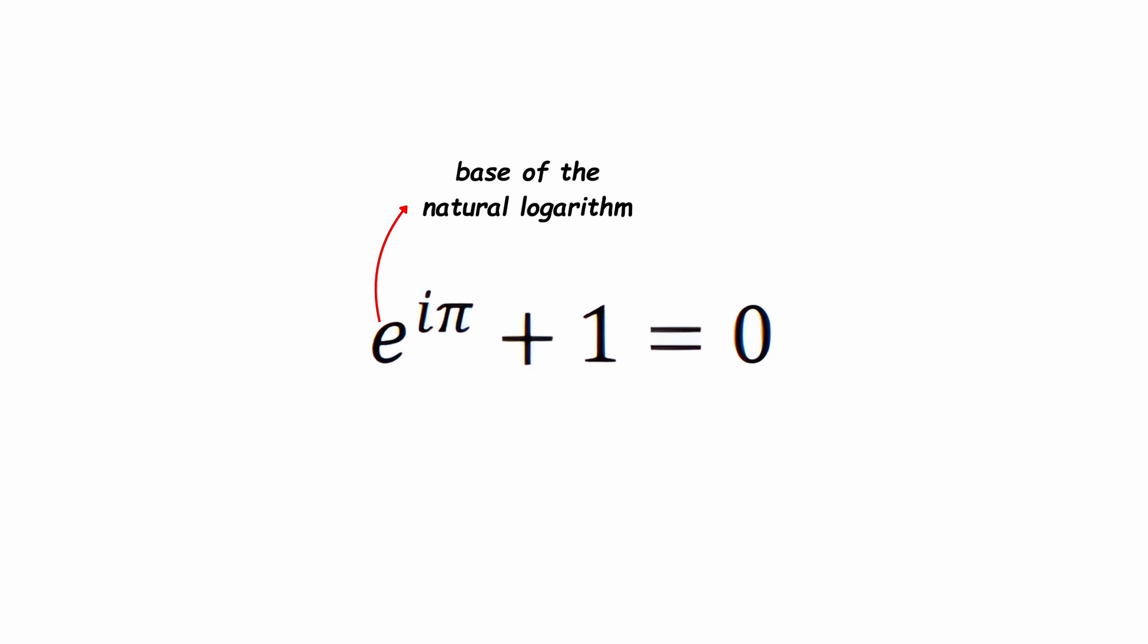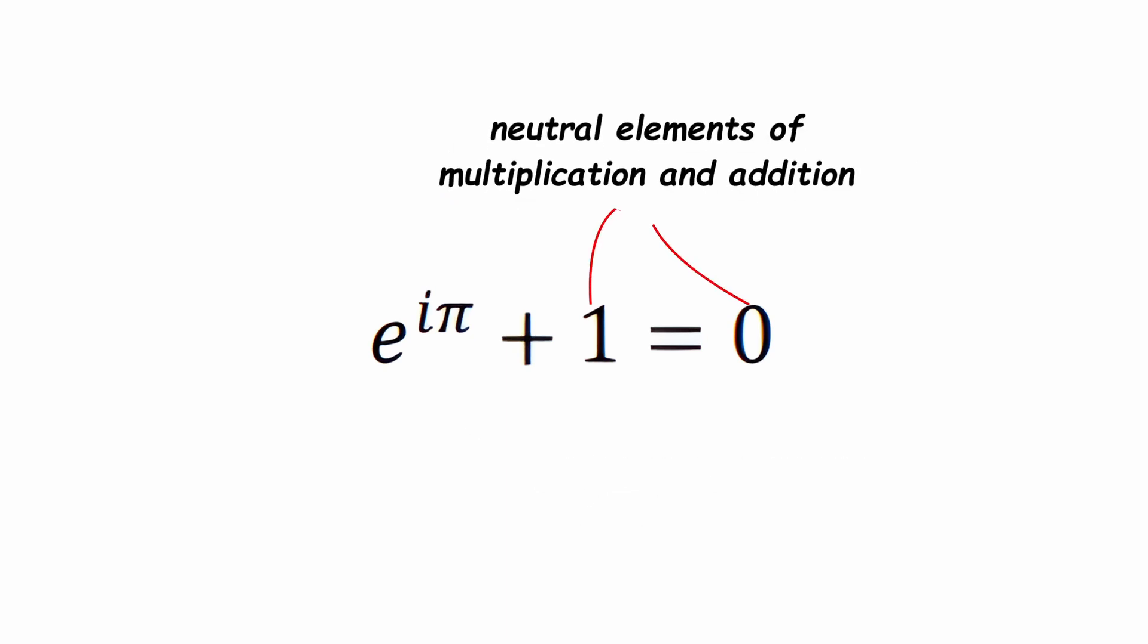Where e is the base of the natural logarithm, i is the imaginary unit equivalent to i squared equals negative 1, pi is the fundamental constant of trigonometry, and 1 and 0 are the neutral elements of multiplication and addition, respectively.